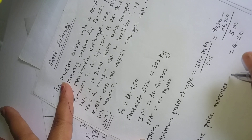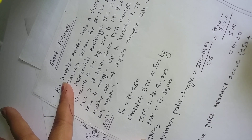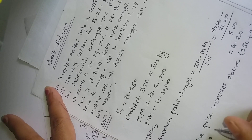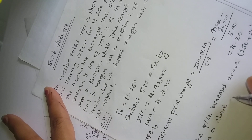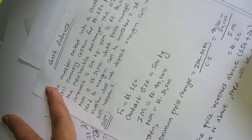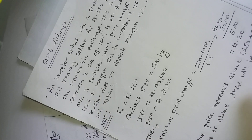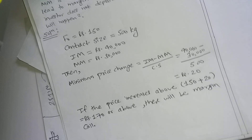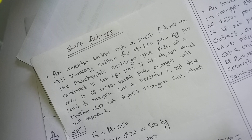The result is Rs. 20. So if the price increases above the future price of Rs. 150 plus Rs. 20 — that is Rs. 170 — there will be a margin call in the short future. The price change that leads to the margin call is Rs. 20.